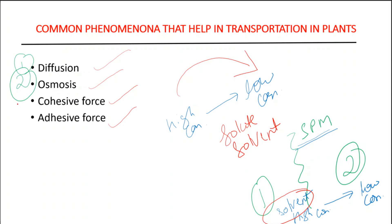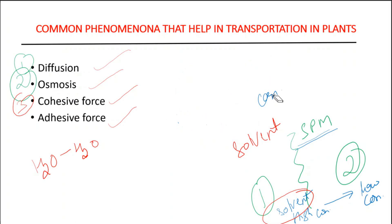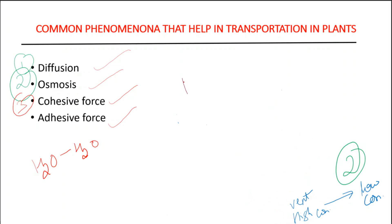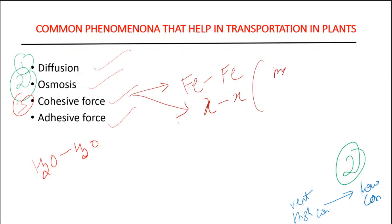The third type of force responsible for transportation in plants is cohesive force. Cohesive force is a special type of force that acts between molecules of the same type. For example, water attracting water is cohesive force. Similarly, if iron binds with another iron molecule, that is also an example of cohesive force. So cohesive force is simply the force of attraction between molecules or substances of the same type.